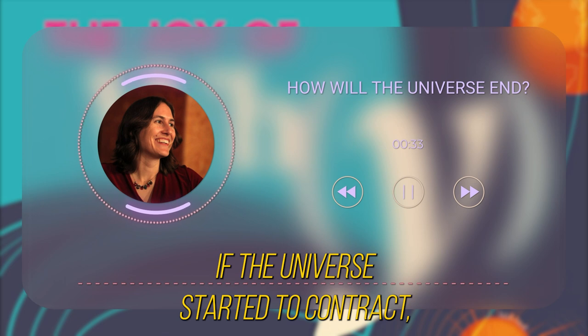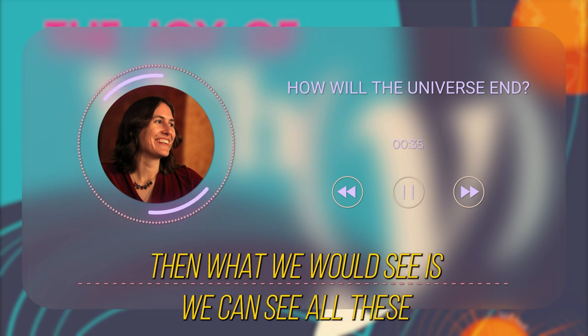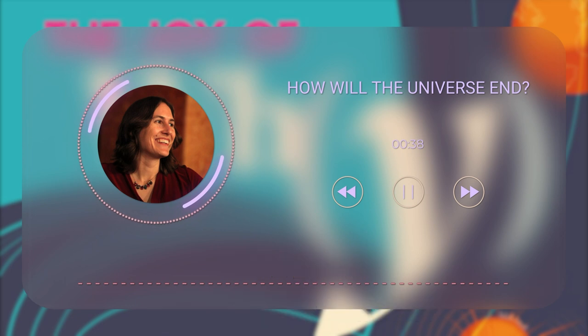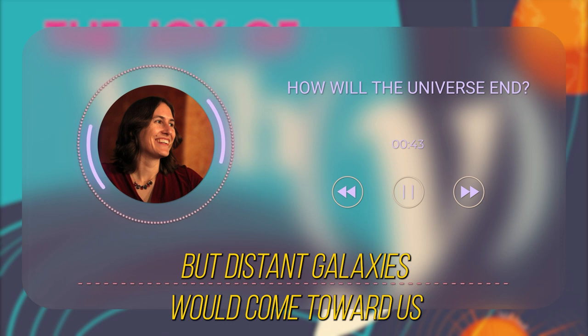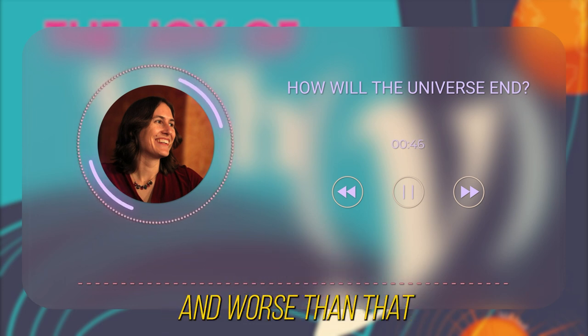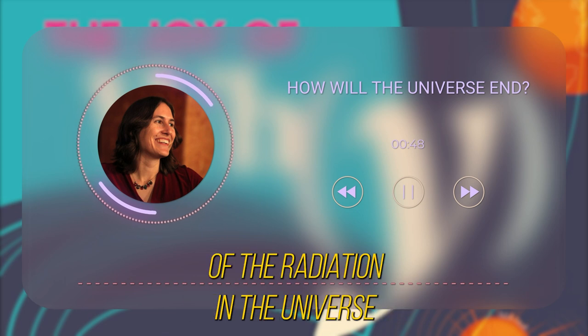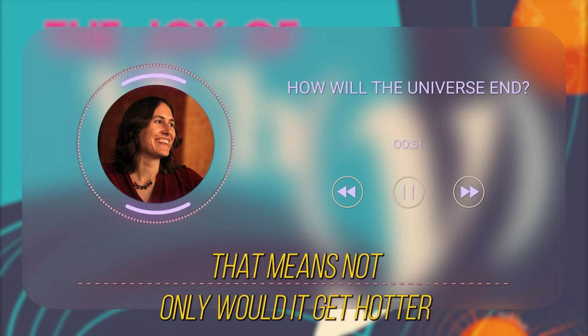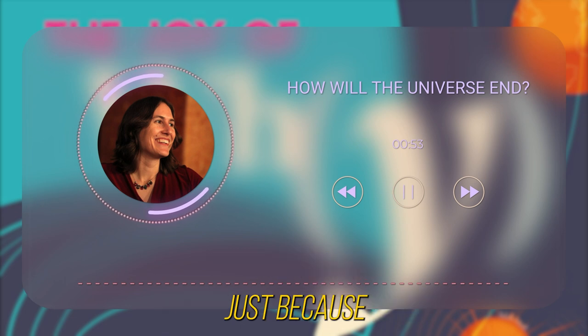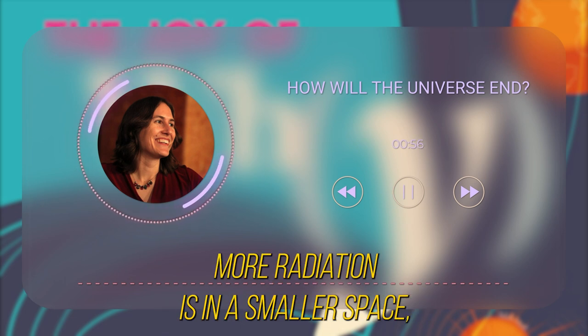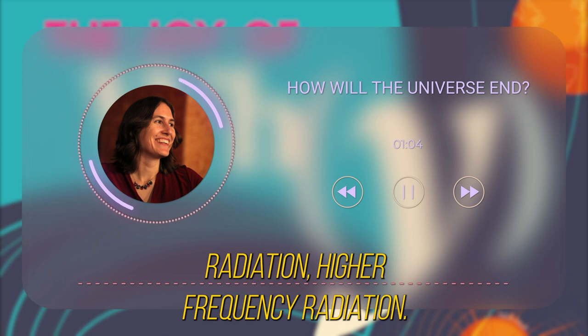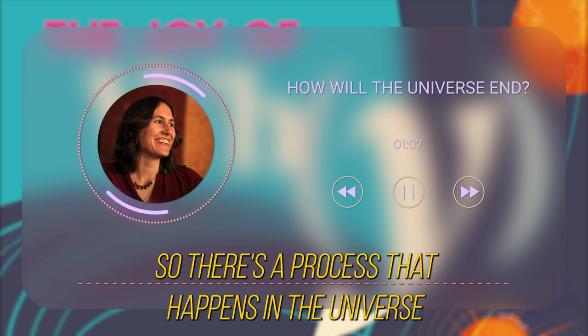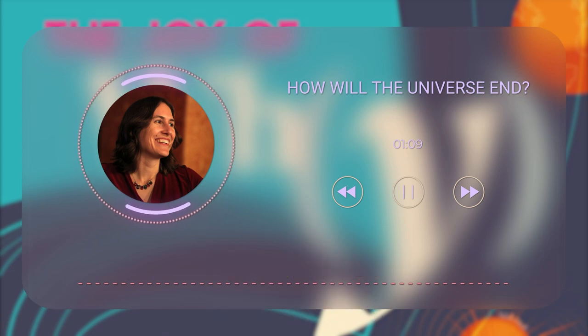Right now we see the galaxies getting farther away and the universe sort of cooling and emptying out. If the universe started to contract, we would see all these distant galaxies kind of rushing toward us and galaxies would be colliding with each other all the time. The universe would get very very dense and crowded, and worse than that, all the radiation in the universe would also be compressed. That means not only would it get hotter, but also all of the radiation would be hardened into higher energy, higher frequency radiation.